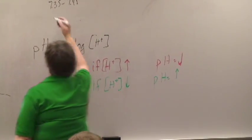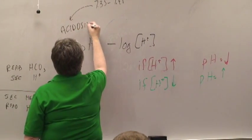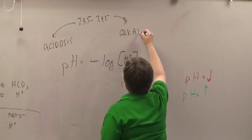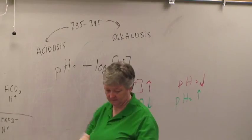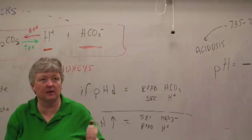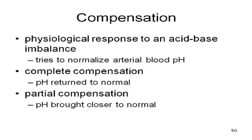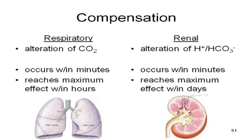We say the lungs and kidneys try to compensate for a disturbance in acid-base balance. As long as you keep your blood pH between 7.35 and 7.45, you're in acid-base balance. Anything less than this, you're going to become acidotic — we say you are in acidosis. Anything greater, you're going to become alkalotic — we say you are in alkalosis. If your pH becomes neutral, you're dead. If you become acidotic, your central nervous system begins to be depressed; you will go into a coma and eventually die. If you become alkalotic, your central and peripheral nervous systems get overstimulated; you will eventually have seizures and die.